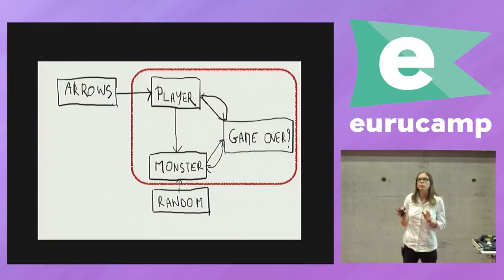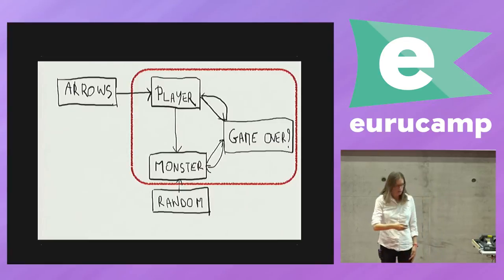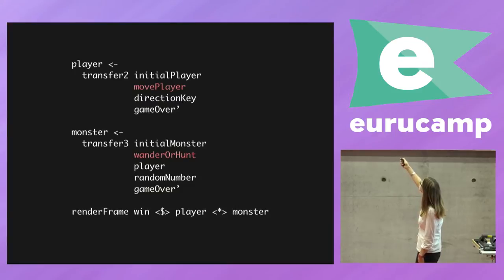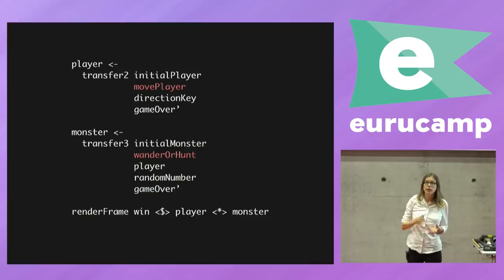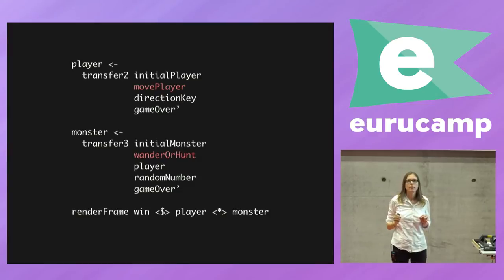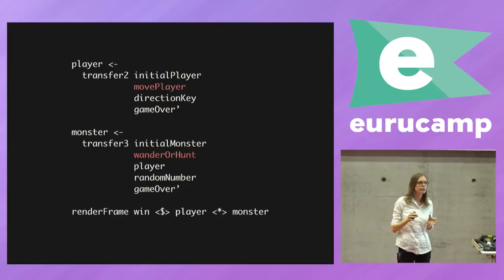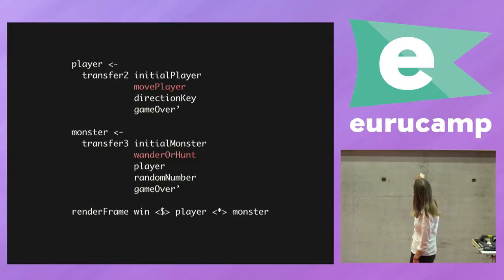If we have a slightly more complex game, we have a player signal, a monster signal, a game over signal, and the external inputs are arrows and a random generator. Our player is dependent on the direction key and game over. Our monster is dependent on player, random number, and game over. The very nice thing here is that what we worry about — the only thing — are these pure functions. You just say: if I feed my player this input, I should get this output, which is very easy to test. You just test whether that's coherent and your whole game should work.